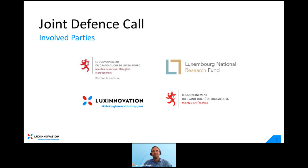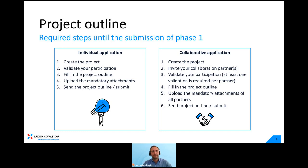Now you should also see the presentation slides. On this slide we see a short recap of the required steps until the submission of the project outline in phase one. We need to distinguish between individual and collaborative applications. For individual applications, the respective company or research organization would need to create the project on the platform, validate their participation, fill in the mandatory questions of the project outline, upload all mandatory attachments, and then submit the proposal by clicking 'send the project outline.'